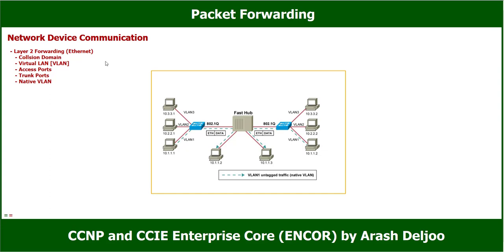In this video I am going to talk about network device communication and layer 2 forwarding. In the previous video we learned about collision domains, VLANs, access ports, and trunk ports. Now we are talking about the native VLAN first, and after that we will learn about allowed VLANs. The native VLAN option exists in dot1Q trunking but is not available in ISL (Inter-Switch Link) trunking.